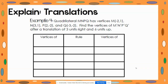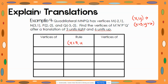For example four, we have quadrilateral MNPQ with vertices at (−2, 1), (3, 1), (2, −2), and (−3, −2). We want to find the vertices of the image after a translation of three units right and six units up. Three units right means our x values get larger, so we add three to x. Moving six units up means y values get larger, so we add six to y. Our rule for all of these is x plus three and y plus six.